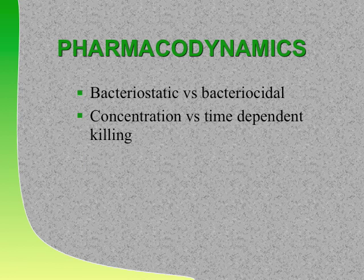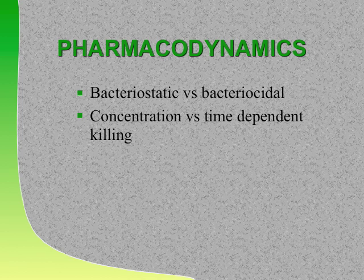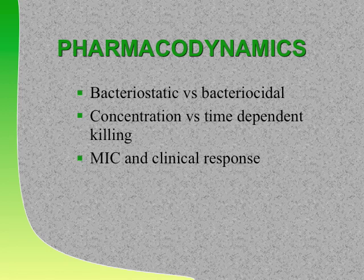What type of drugs are concentration-dependent killers that we can use once a day? Aminoglycosides. We used to use aminoglycosides every eight hours, and now we use them once a day because they kill bugs by concentration-dependent killing. Penicillins and beta-lactams are time-dependent killers, so if you really want to use them most effectively, you would use continuous infusion, because time is more important than concentration. Knowing this helps when dealing with resistant bugs.